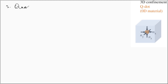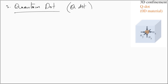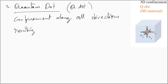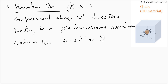Now we shall discuss the quantum dot, also called Q dot. This is an extreme case in which confinement of the particle occurs in all three directions, resulting in a zero-dimensional nanostructure. Since the particle is confined along x, y, and z, it will possess discrete energy levels associated with all three directions. This is the reason why we call it a quantum dot.